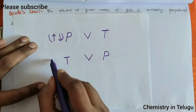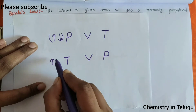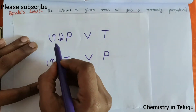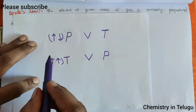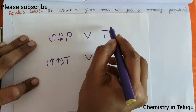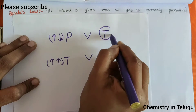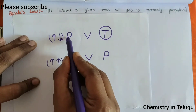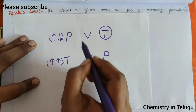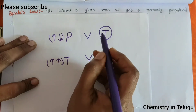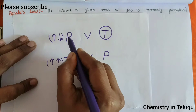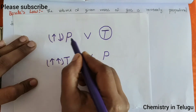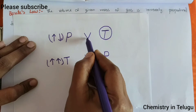You will get the same directions — upward arrow, same directions. You will get the opposite directions. At constant temperature, pressure increase means volume decrease. Pressure is inversely proportional to the volume — pressure increase, volume decrease.